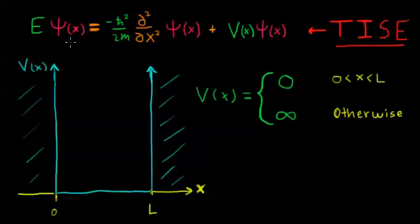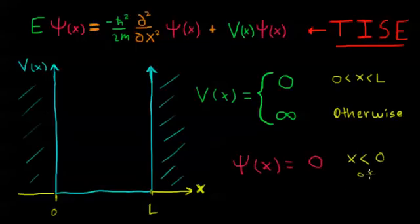We already know what this wave function looks like outside of this box. For x less than 0 or x greater than L, let's write that down. Psi of x, our wave function as a function of x, equals zero for the cases where x is less than 0 or when x is greater than L.